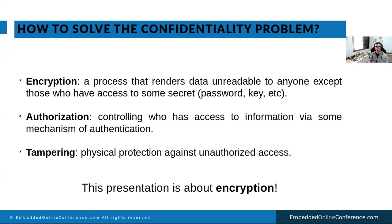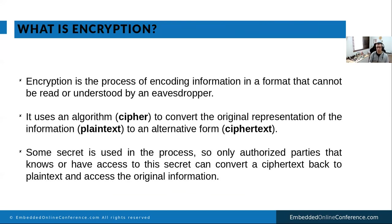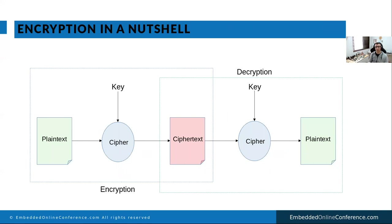Our main objective here is encryption. Encryption is the process of encoding information. The input is what we call cleartext and the output is what we call ciphertext. In the middle we have a cipher that usually receives an input we call a key — some secret used by the algorithm implementing the cipher to generate the ciphertext output. That's the main idea, covering both the encryption and the decryption process.